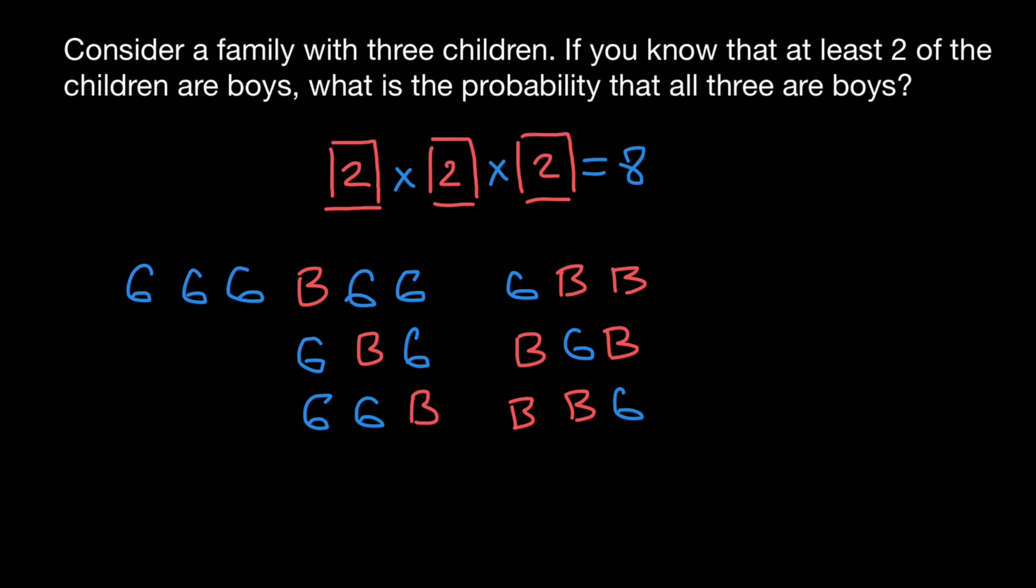And the last combination would be when all three children are three boys: boy, boy, boy. Total number of combinations as you see: eight, one, two, three, four, five, six, seven, eight.